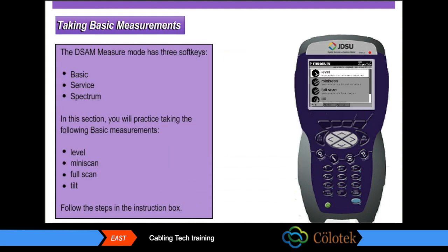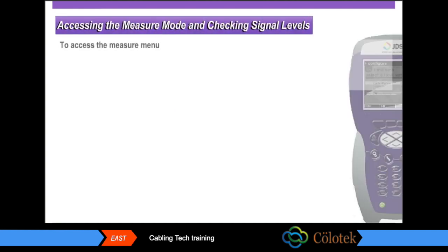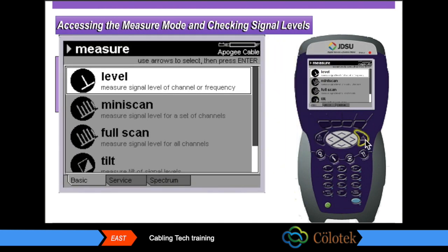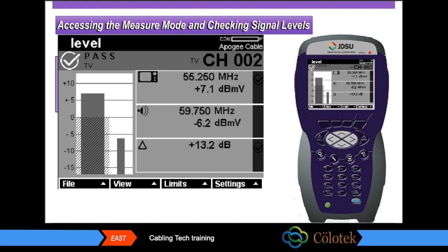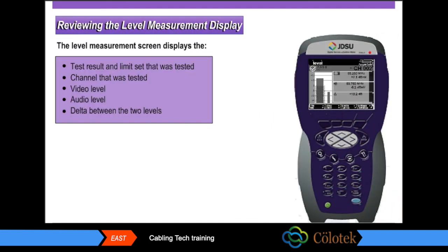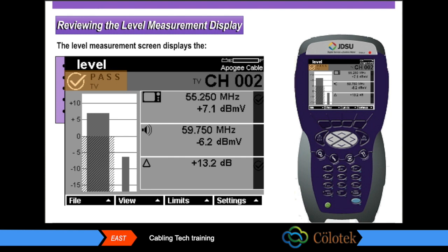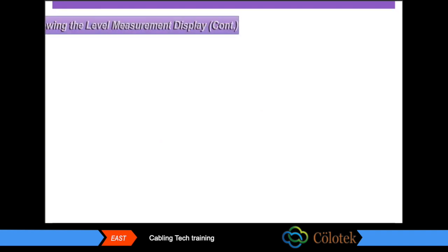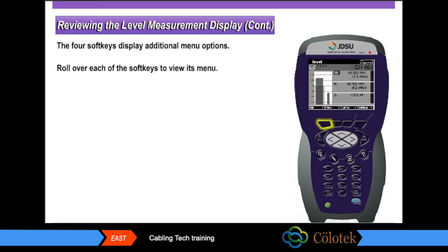To access the measure menu, press the measure mode key, then press the enter key to select the level test. The level measurement screen displays the test result and the limit set that was tested, the channel that was tested, the video level, the audio level, and the delta between the two levels. The four soft keys — file, view, limits, and settings — display additional menu options.